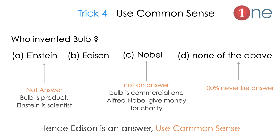Trick number four: use your common sense. Suppose the question is 'Who invented the bulb?' Choices: A: Einstein, B: Edison, C: Nobel, D: None of the above. We can guess 'none of the above' is unlikely, so focus on A, B, C. Einstein is a scientist — scientists rarely work on commercial products, so A is unlikely. Nobel is associated with charity and prizes, not product development, so C is unlikely. The remaining answer is B: Edison — solved by common sense alone.